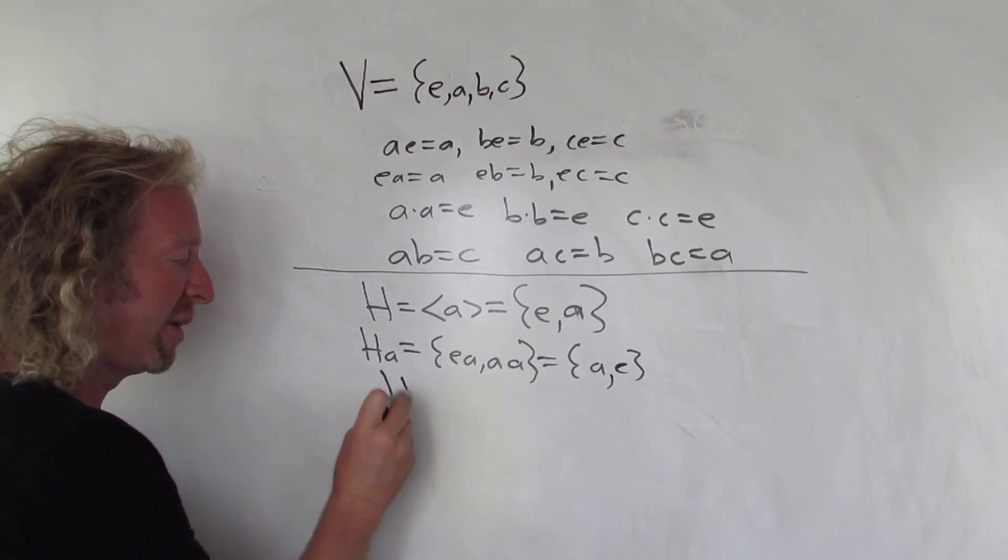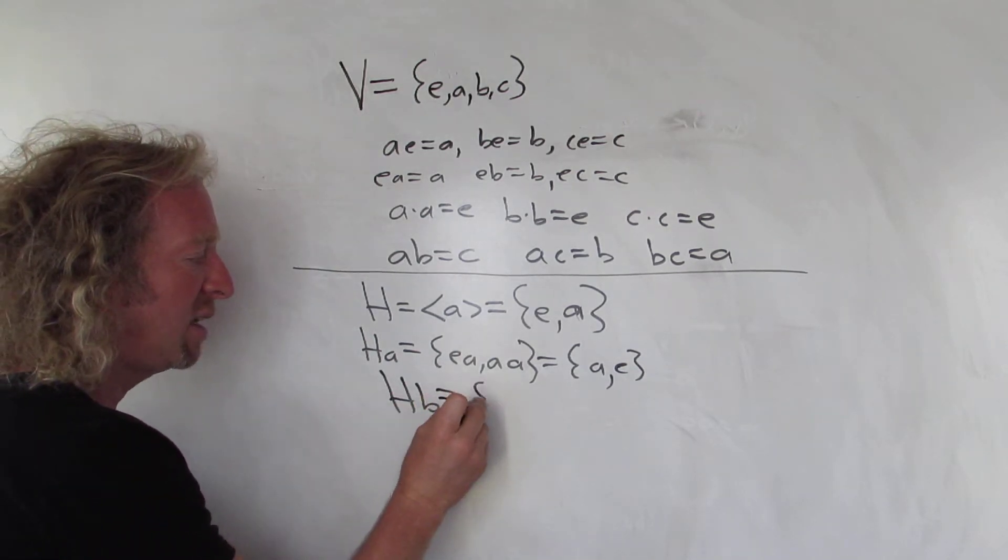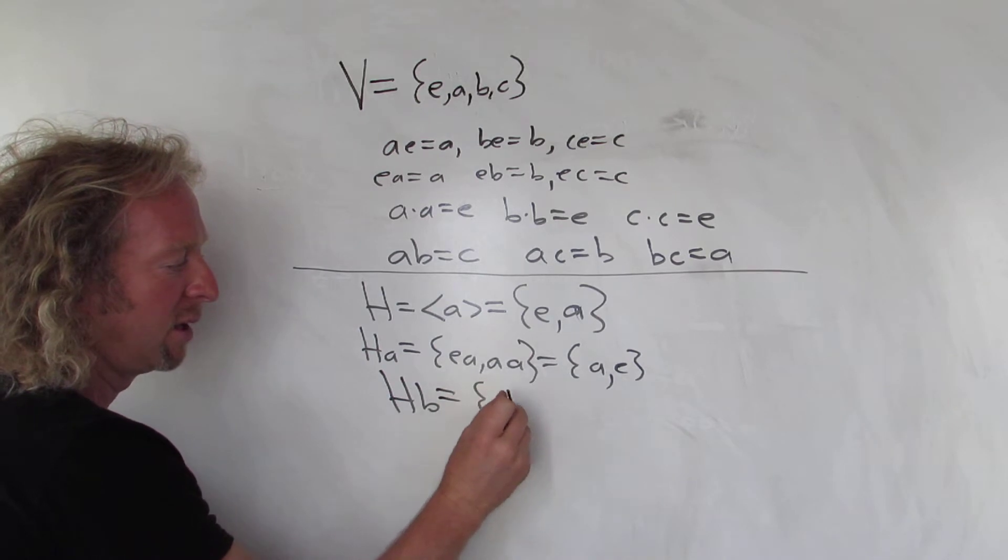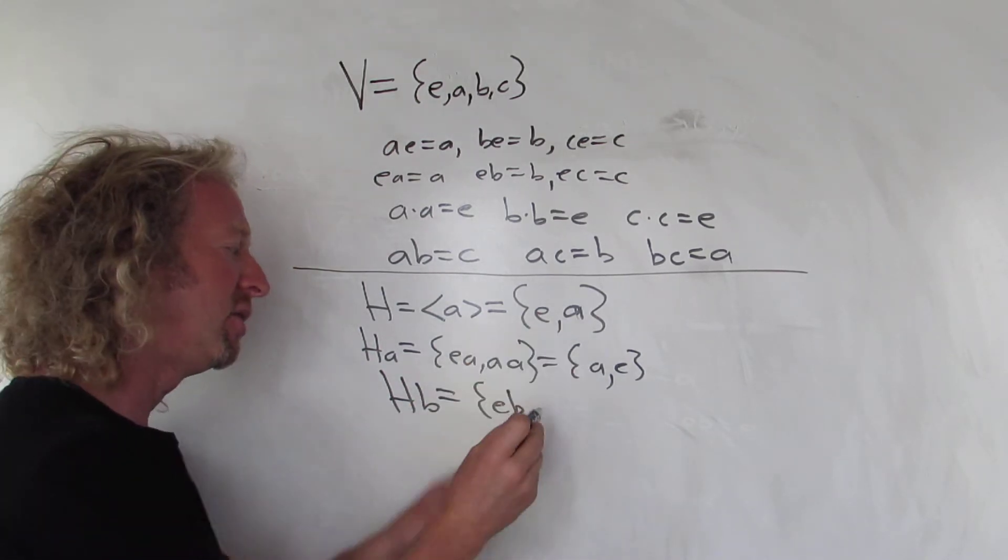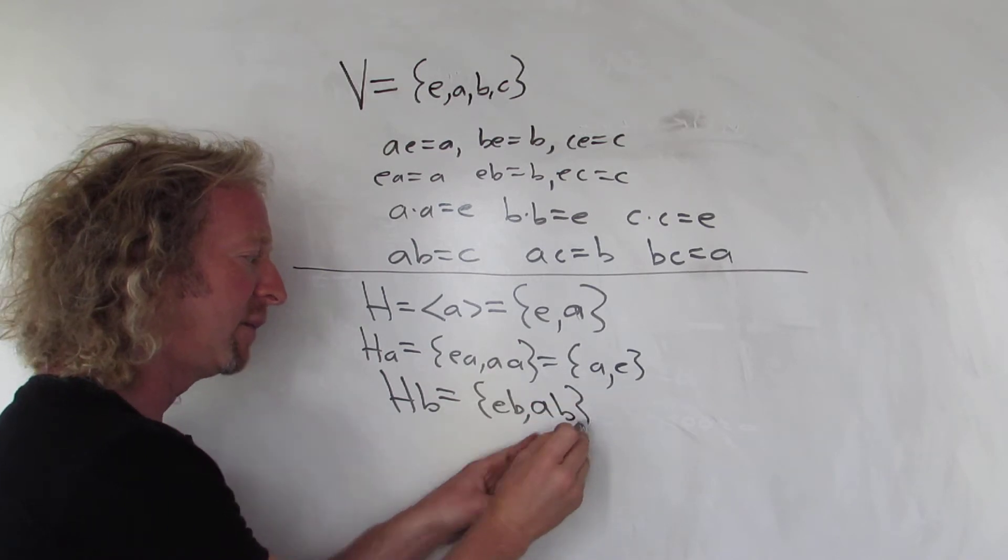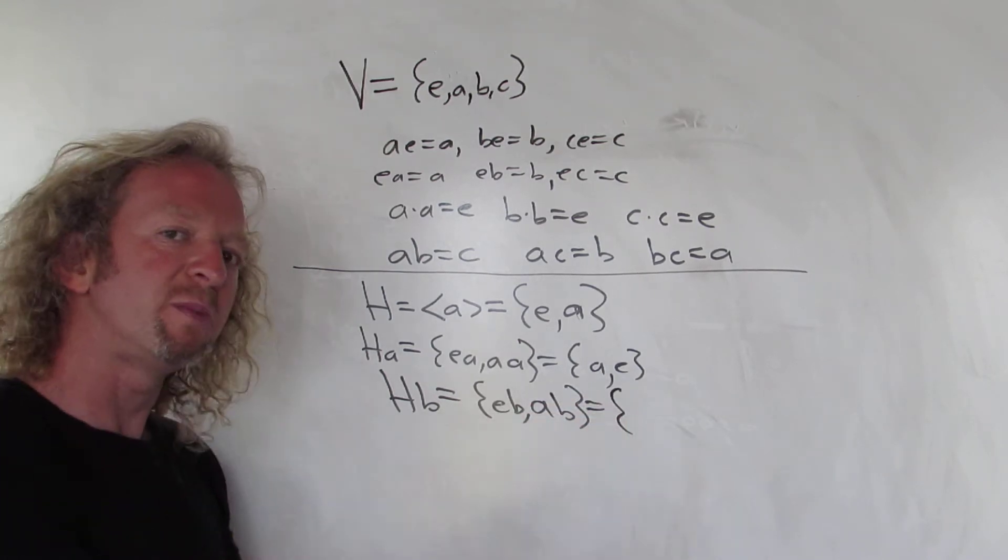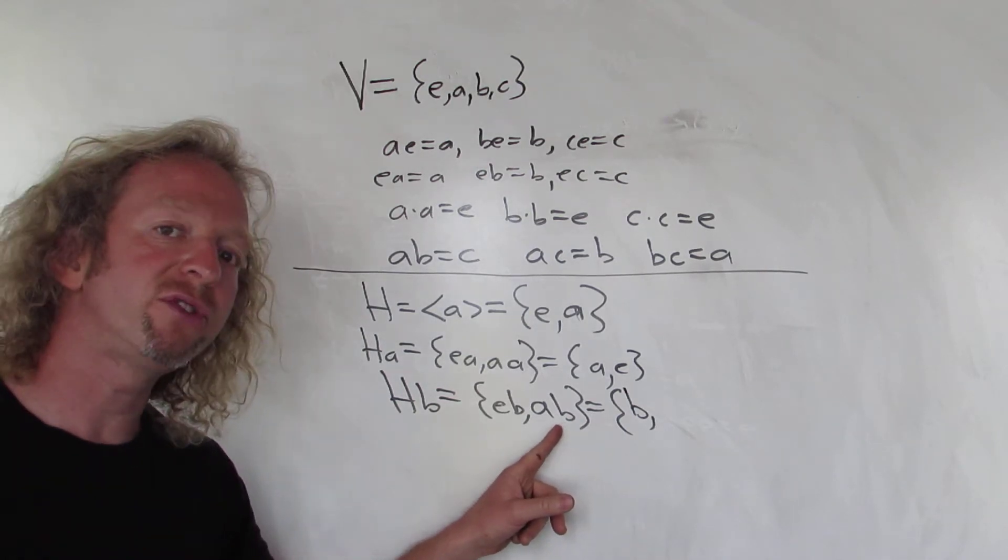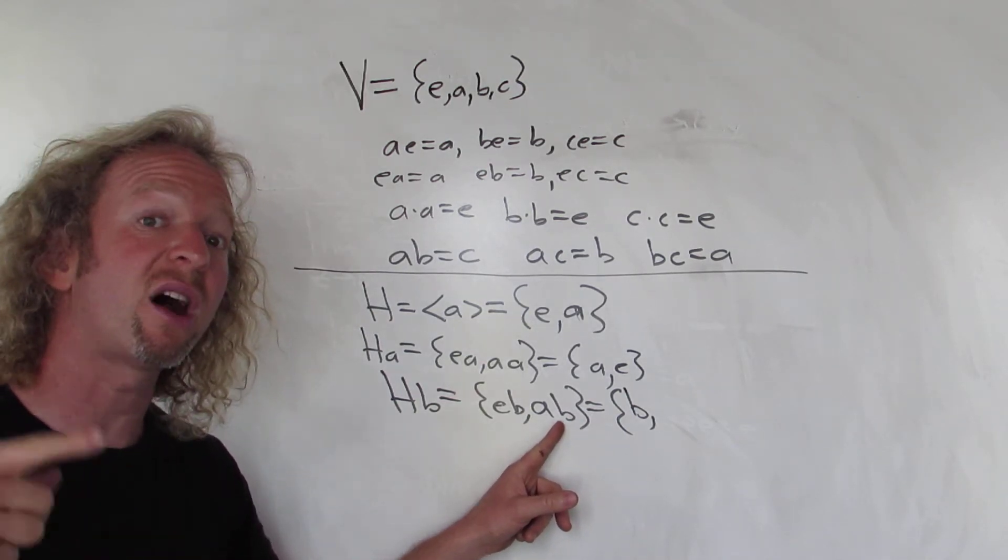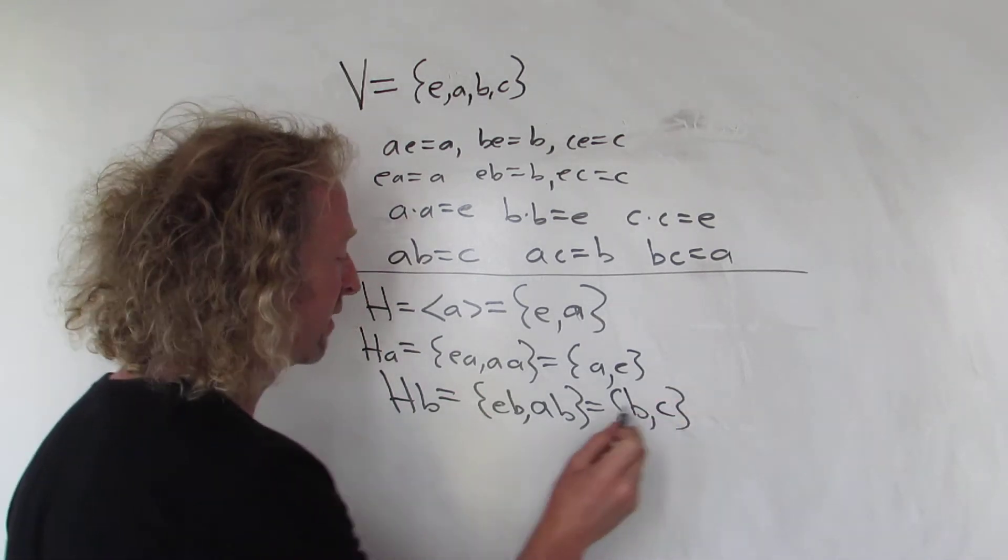If you look at HB, though, HB, that's going to be EB. You just take each element and you multiply it by B on the right, and here you get AB. Well, EB, EB is just B. It's the identity. AB, well, you have the product of two non-identity elements, so you're going to get the other non-identity element. You're going to get C. Beautiful stuff.